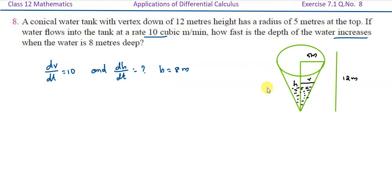The height and radius relationship: r/h is equal to 5/12. To find dh/dt, we replace the variables. Therefore, r is equal to 5/12 times h.